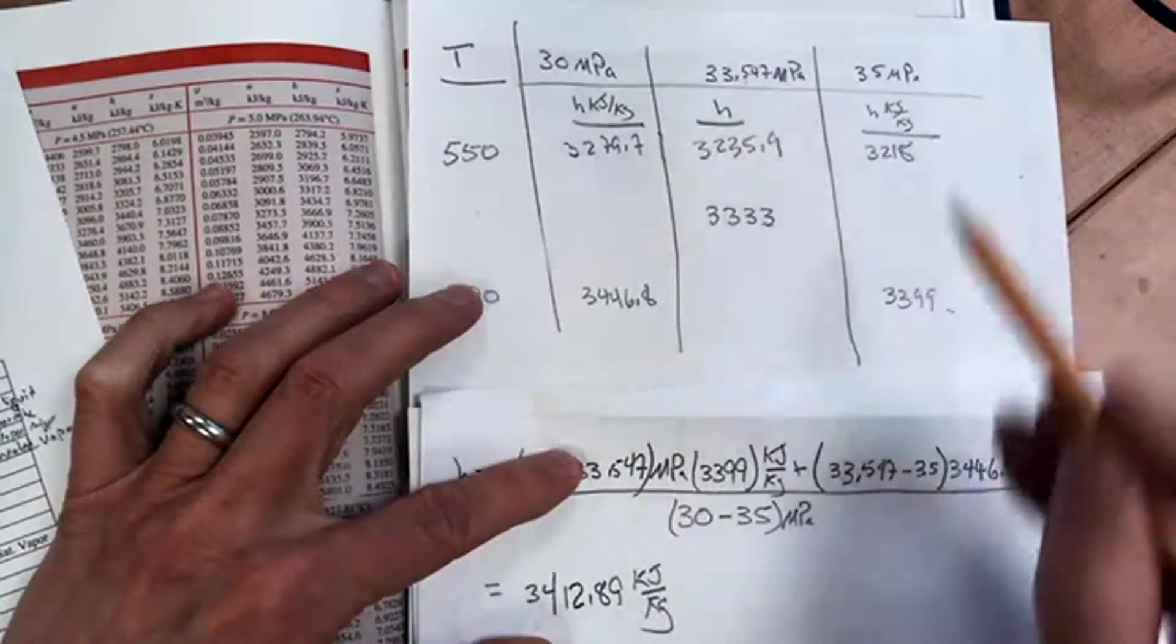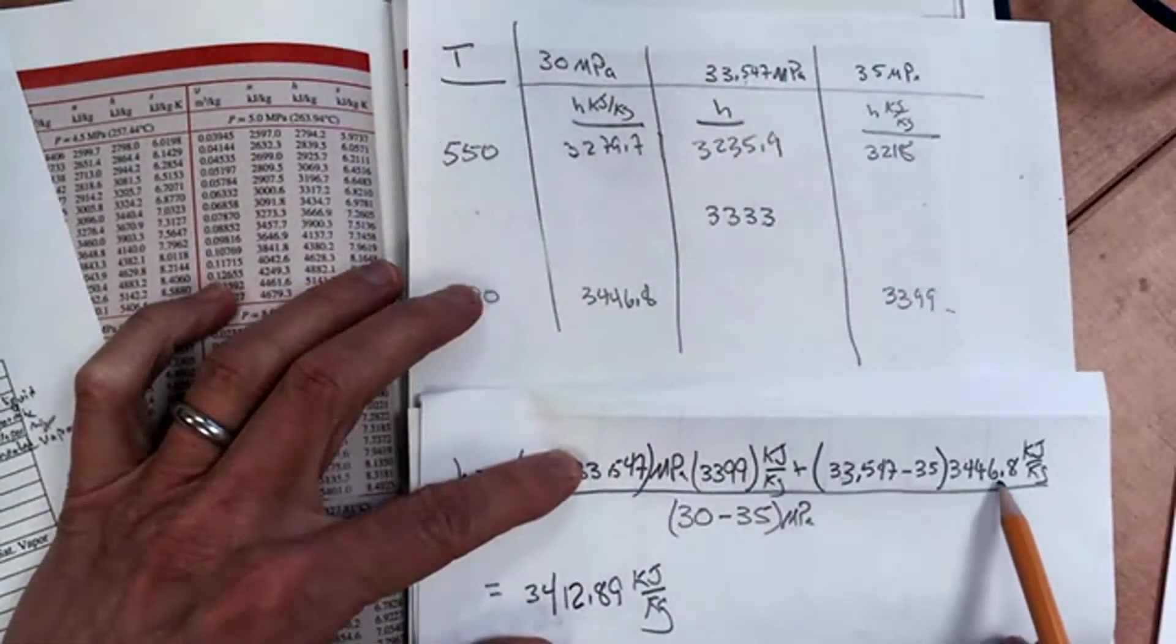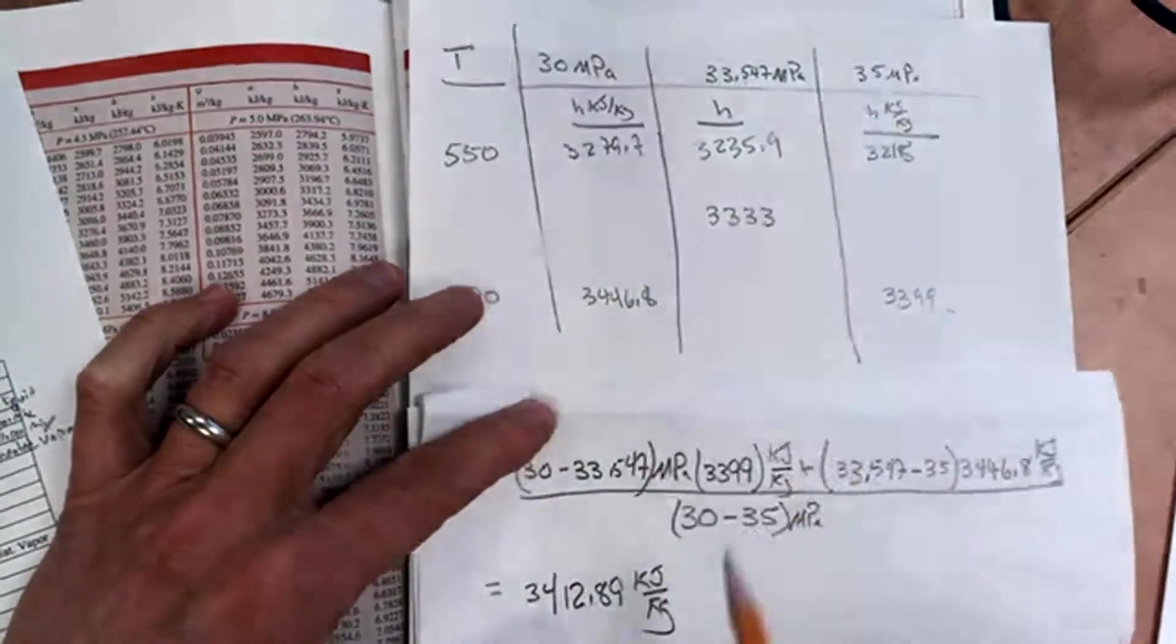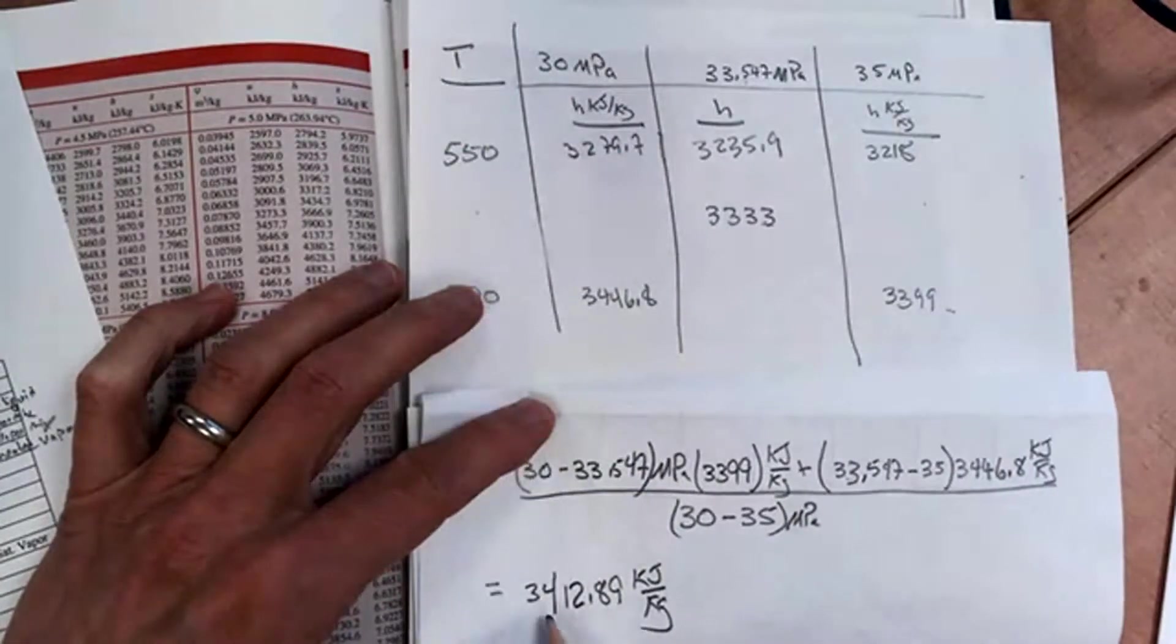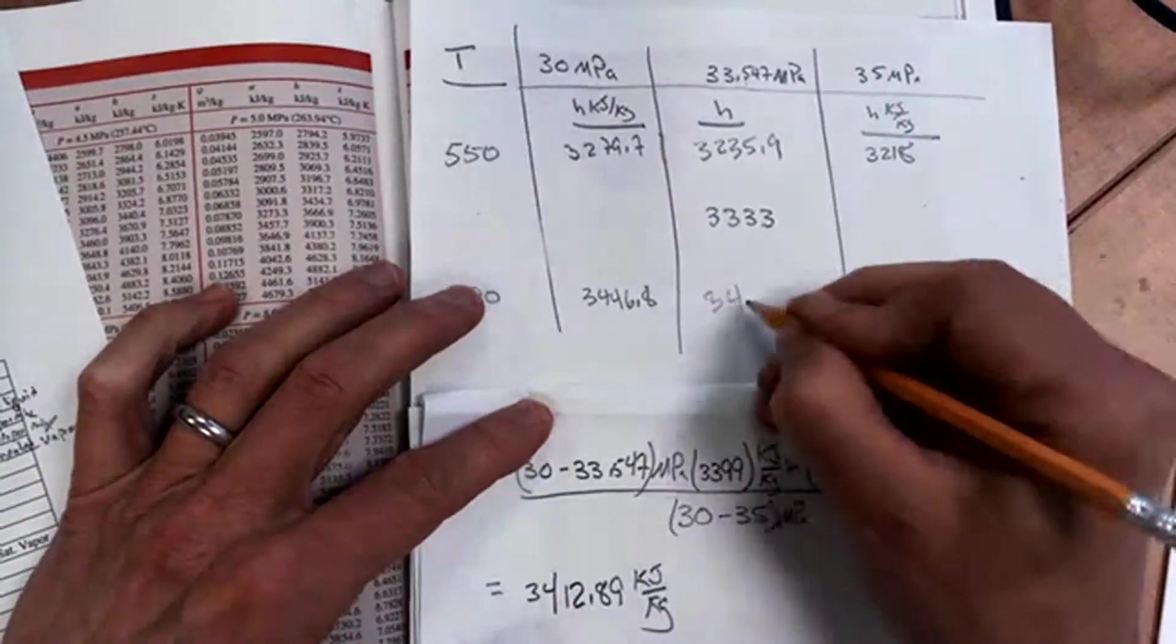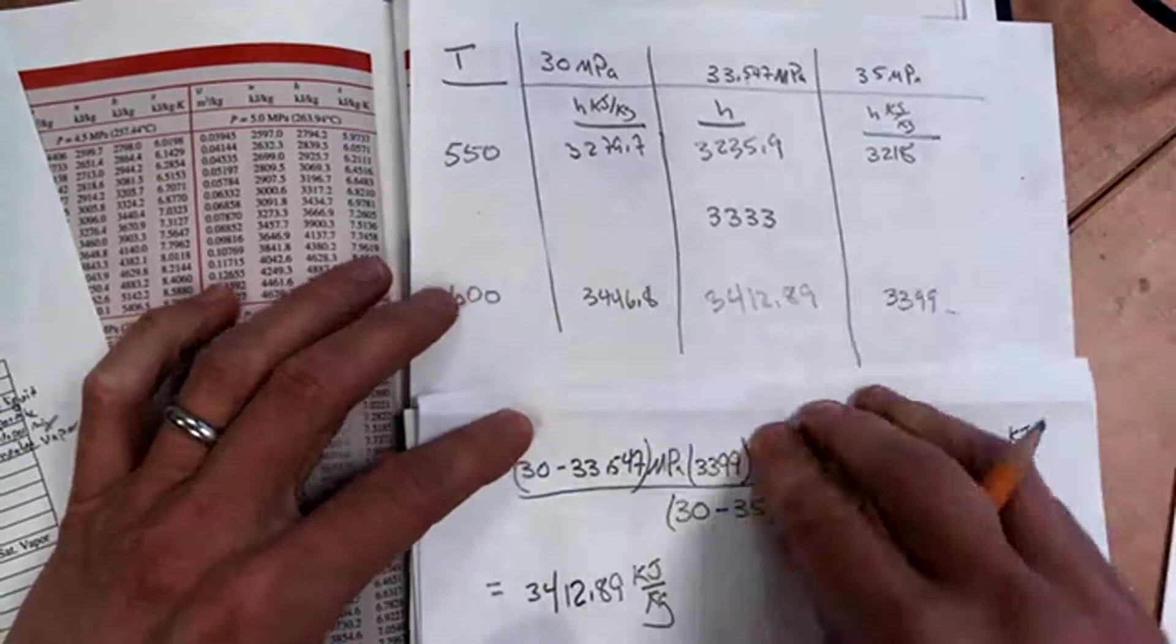33.547 minus 35 times the opposite, 3,446.8. I got that here. All divided by this total distance, 30 minus 35. I get 3,412.89. 3,412.89. Alright.